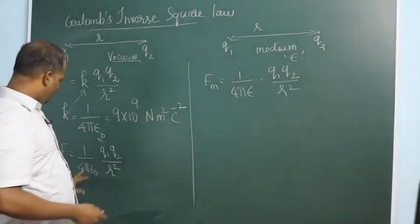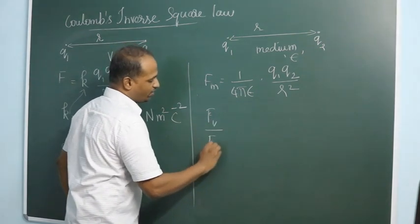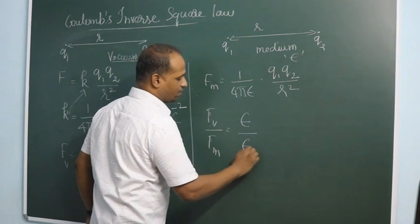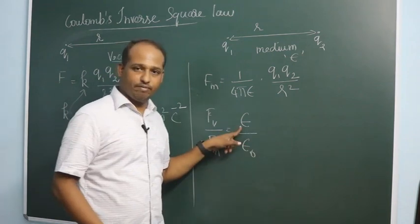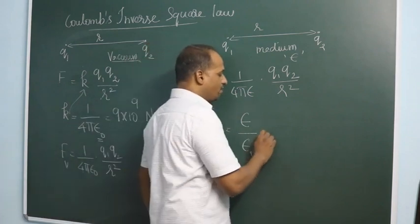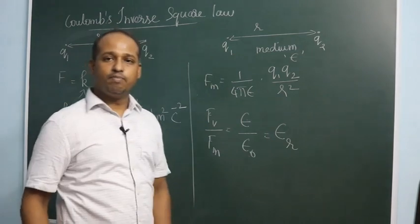But if you divide force in vacuum by force in medium, what you will get is epsilon by epsilon naught. Epsilon is the permittivity of the medium. Epsilon naught is the permittivity of vacuum. The ratio of them is called epsilon R, or relative permittivity.